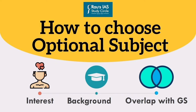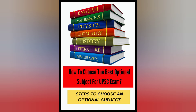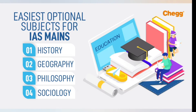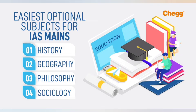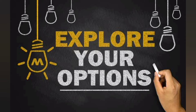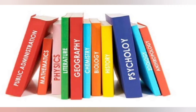There are many important aspects to be kept in mind while choosing an optional subject. Number 1 is interest and academic background of the aspirant. Kindly identify your interest in a subject by exploring it through school level, class 11th and 12th preferably.